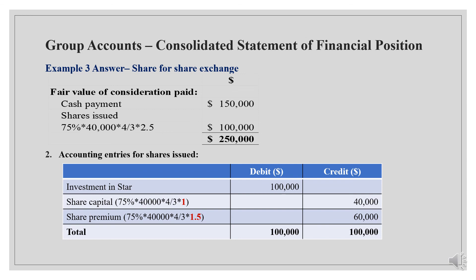Accounting entries for share issue: Debit Investment in Star (investment is an asset, so debit); Credit Share Capital — calculated as shares issued × nominal value per share $1; Credit Share Premium — calculated as shares issued × premium per share ($2.5 − $1). 股本等于母公司股票发行数量乘以每股面值1，股本溢价等于发行数量乘以每股溢价2.5减1.